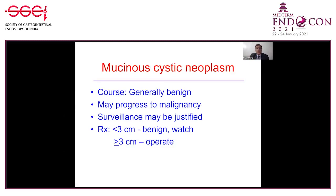The clinical course of mucinous cyst neoplasms — generally they are benign but may progress to malignancy, unlike serous cyst adenoma, and therefore surveillance is justified. Most guidelines suggest if the lesion is less than three centimeters — and European guidelines say less than four centimeters — they are benign and one can only watch for increase in size or appearance of high-grade features. But if the patient is symptomatic or the lesion is more than four centimeters, surgery can be advised.